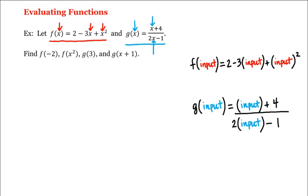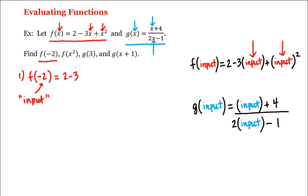Alright, so we're first asked to find f of negative 2, which means that negative 2 is our input, which means we put it over here and here. That is, this is equal to 2 minus 3 times negative 2, plus negative 2 quantity squared, which is equal to 2 plus 6 plus 4, or 12, which would be your answer to the first part.